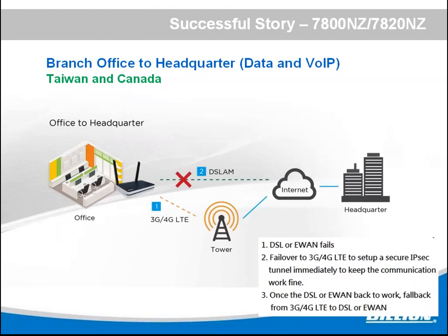Another application is branch office to headquarter connectivity. You want to ensure the branch office can always connect to headquarters — use our device with DSL as the main interface and mobile as the secondary interface to ensure always-on connectivity. Besides, we provide VPN in our device so you can establish a secure tunnel between the branch office and headquarters.